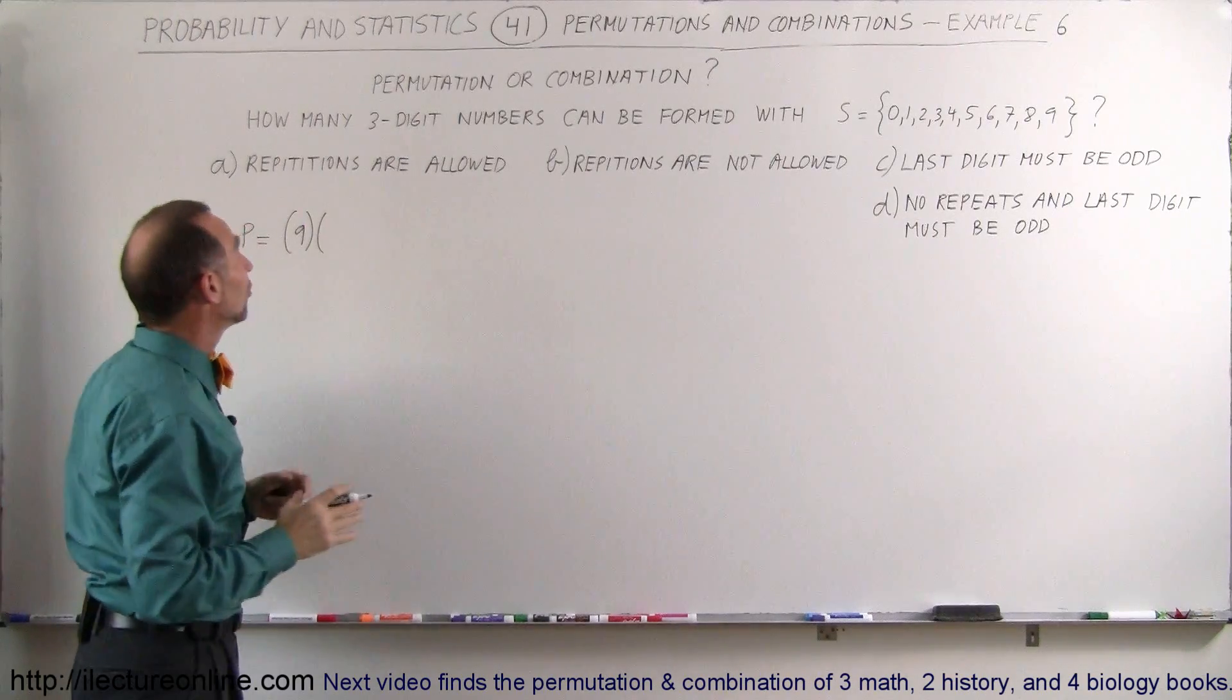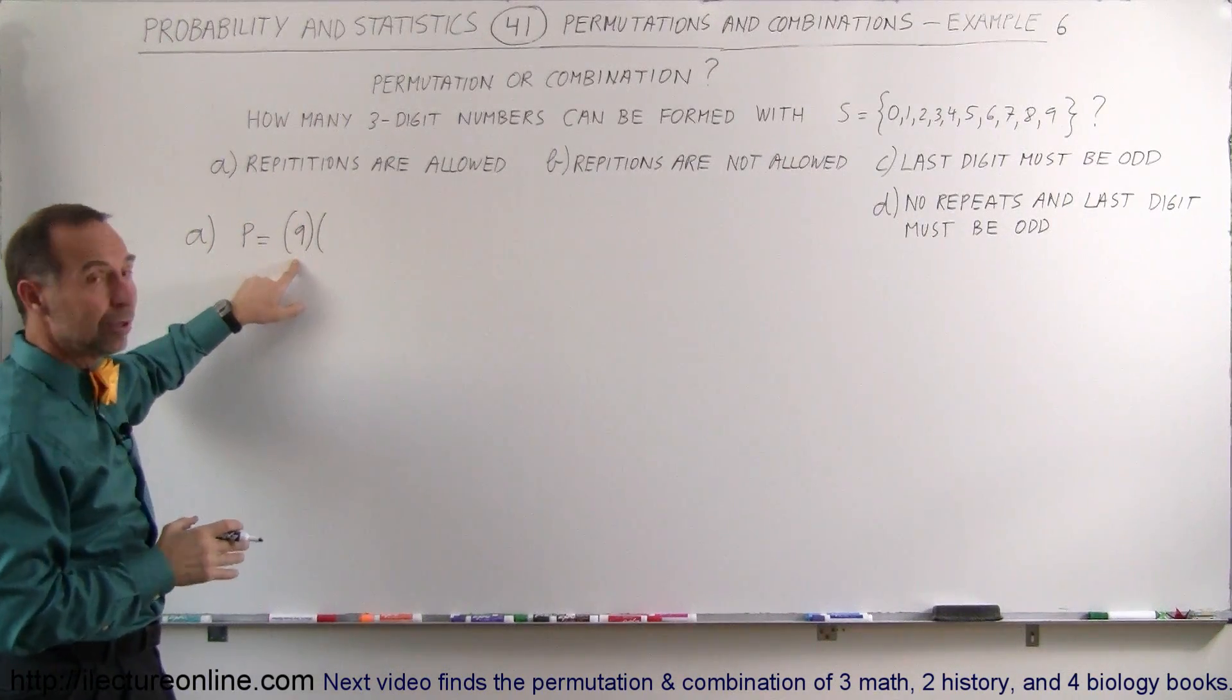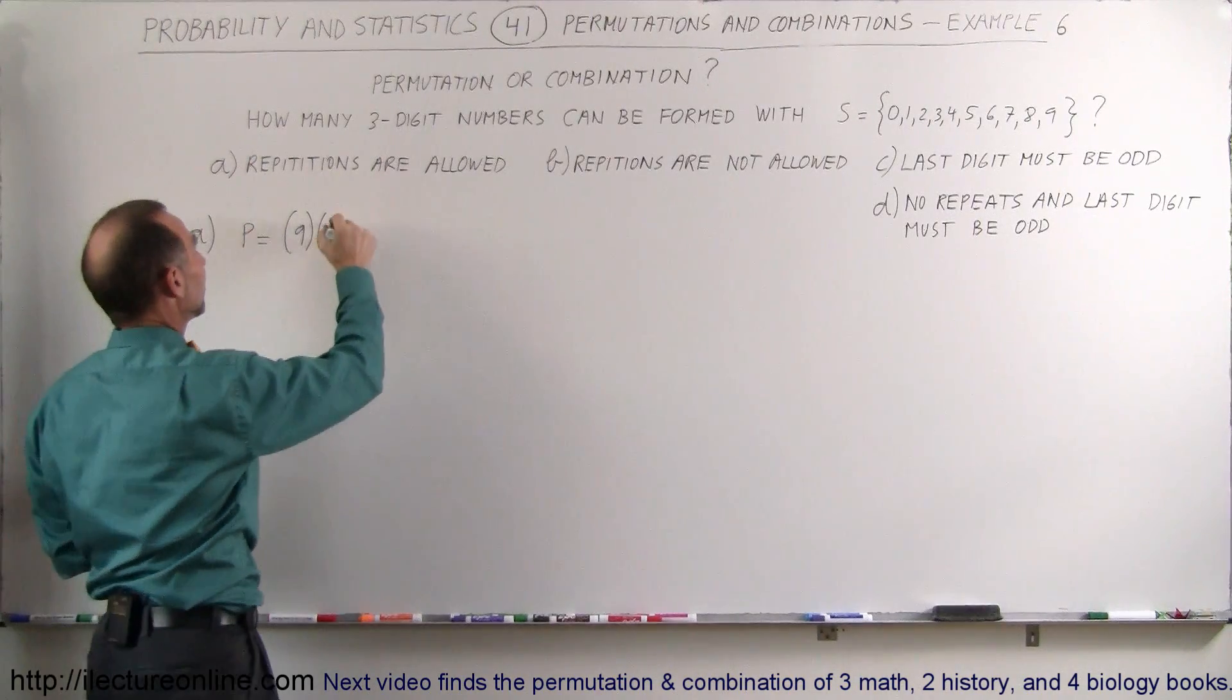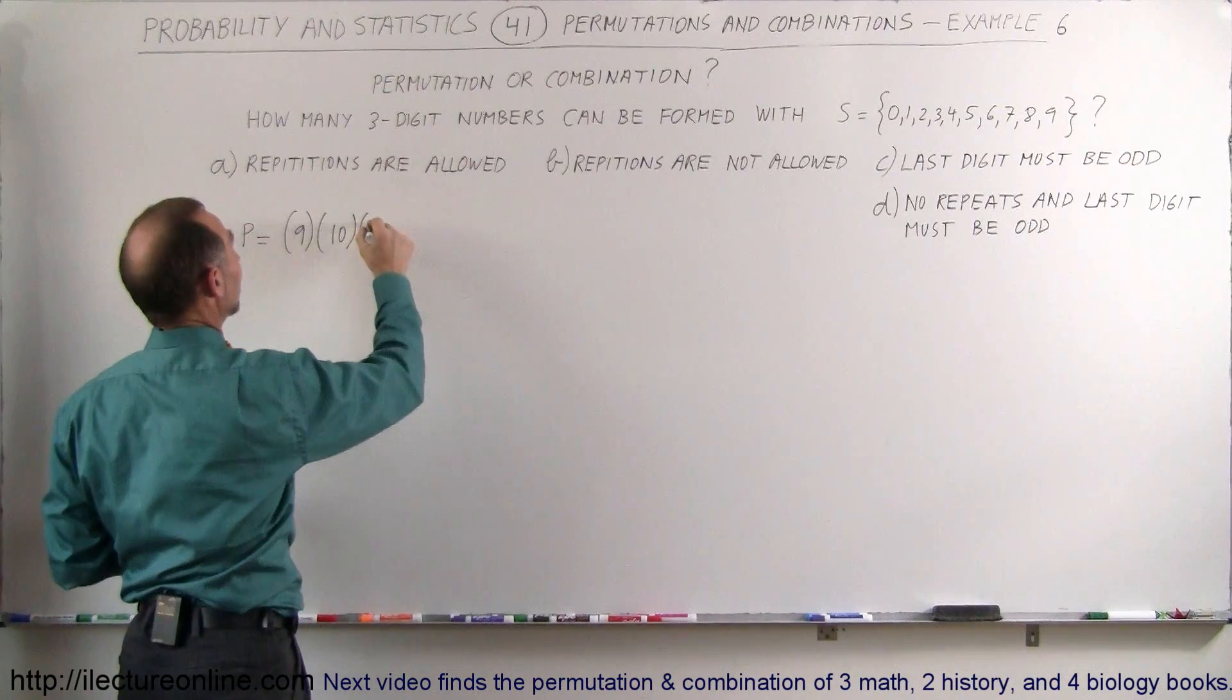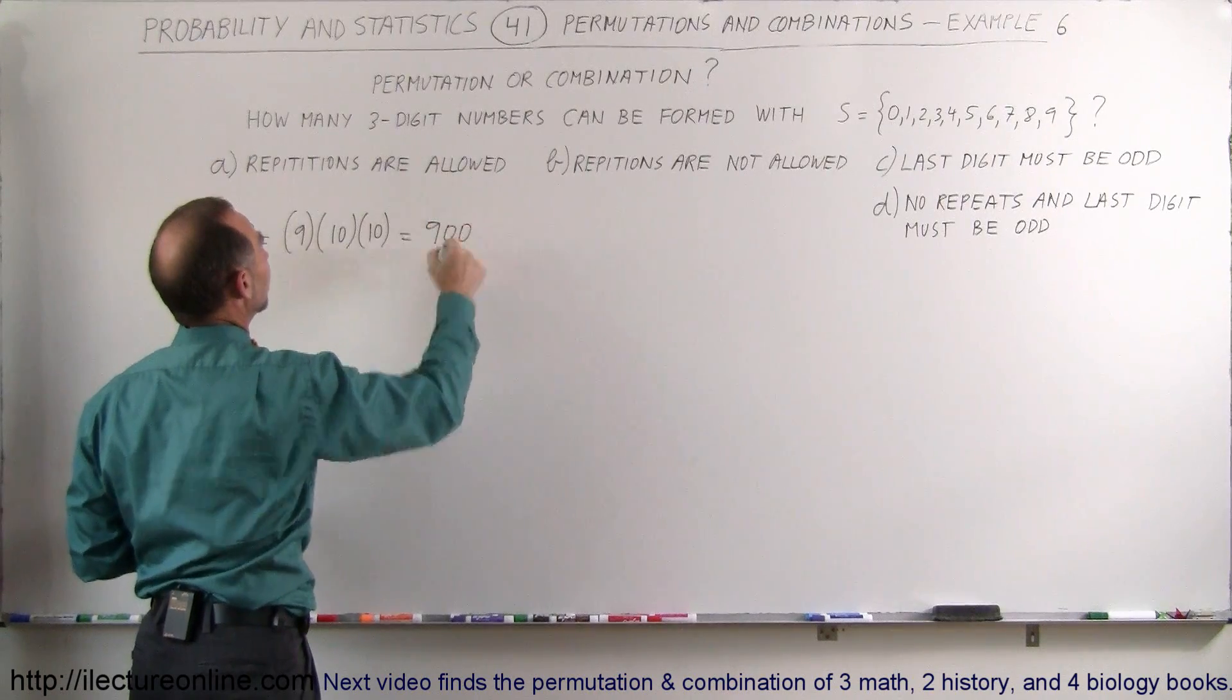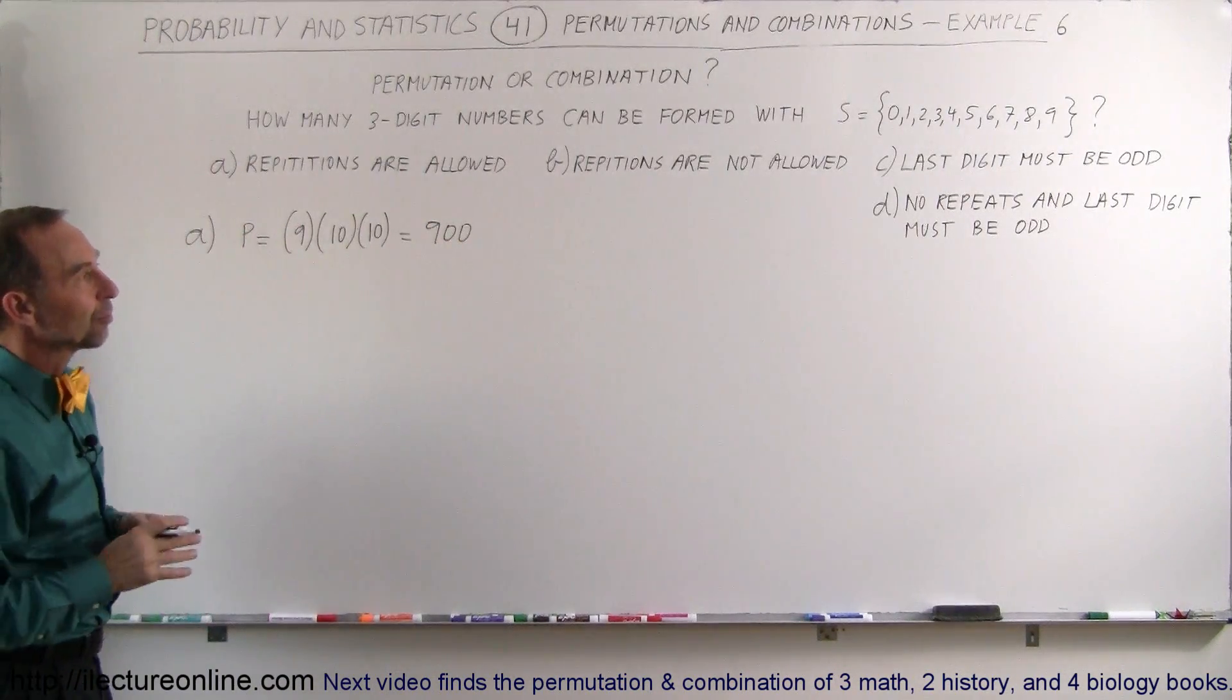For the second digit, since repetitions are allowed, you can have anything you picked before plus any of the numbers from 0 to 9, so therefore there's 10 possibilities. And again for the third digit there's no restrictions so there's 10 different numbers you can pick there. And so in total we have 900 permutations when you want to make a three-digit number with the numbers from 0 to 9.